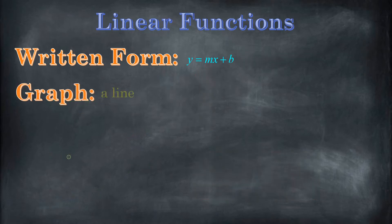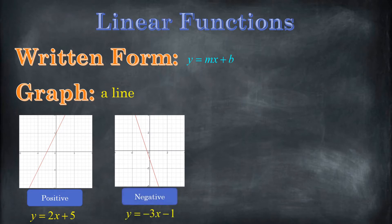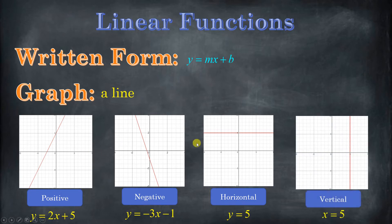Now let's talk about what the graphs look like. The graphs are just lines. You could have a positive slope, or a negative slope, or our two special cases: a horizontal line, which is y equals a number, or a vertical line, which is x equals a number. Now it turns out that when it's x equals a number, it's an equation, but it's not actually a function, because in order to be a function, each input has to have exactly one output. Here our input of five has infinitely many outputs, so that one's a little bit different.